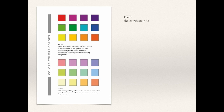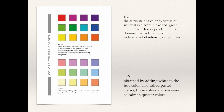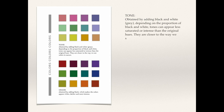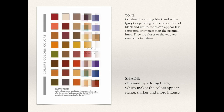What type of colors? You have Hue — the attribute of color by virtue of which it is discernible as red, green, etc., and which is dependent on its dominant wavelength and independent of intensity or lightness. Tint — obtained by adding white to the hue color, also called pastel colors; these colors are perceived as calmer, quieter colors. Tone — obtained by adding black and white, which is gray, depending on the proportion; tones can appear less saturated or intense than the original hue, and they are closer to the way we see colors in nature.